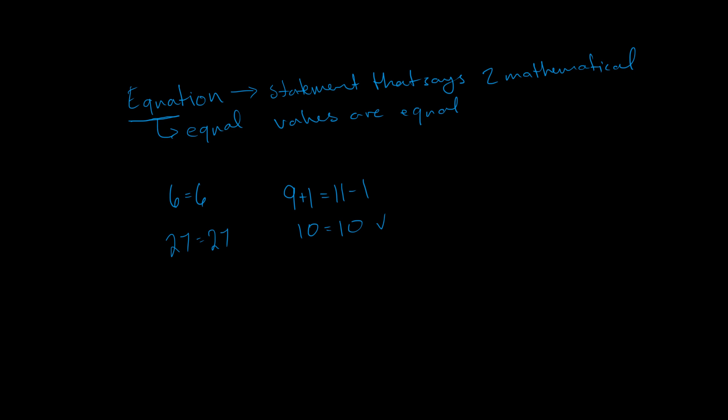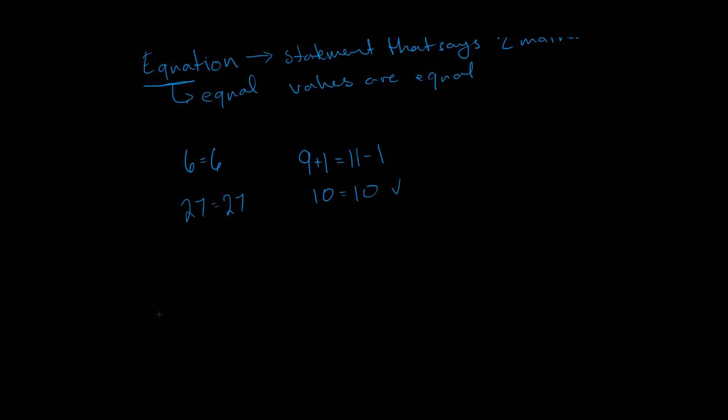Now, before we write out what an equation actually looks like, there's a few categories of numbers and symbols that are worth knowing. The first one is called a constant. A constant is just a number that's alone. It's not multiplying by any letters. It can multiply other numbers, but the important thing is that there's no letters or variables attached to it.